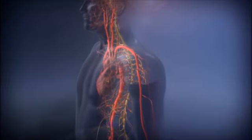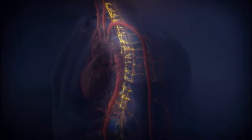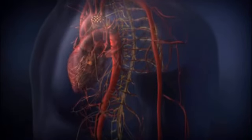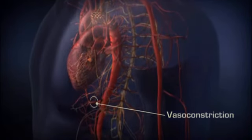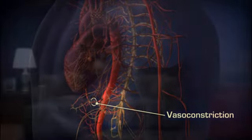In healthy people, the sympathetic nervous system quickly responds by triggering reflex tachycardia and vasoconstriction, thus restoring normal tension in the upright posture.